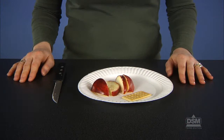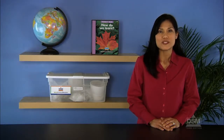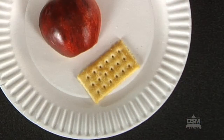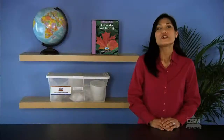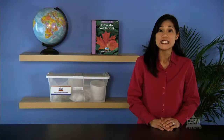Distribute a paper plate containing a cracker and a piece of fruit to each student and invite students to eat the cracker, sharing which senses they are using. Ask the class what the cracker looked like, how it felt between their fingers, what it smelled like, and what sound they heard when they bit and chewed it. Encourage students to recognize that we often use more than one sense at a time. Repeat this process with the piece of fruit, leading students to recognize that eating is an activity that uses all five senses.